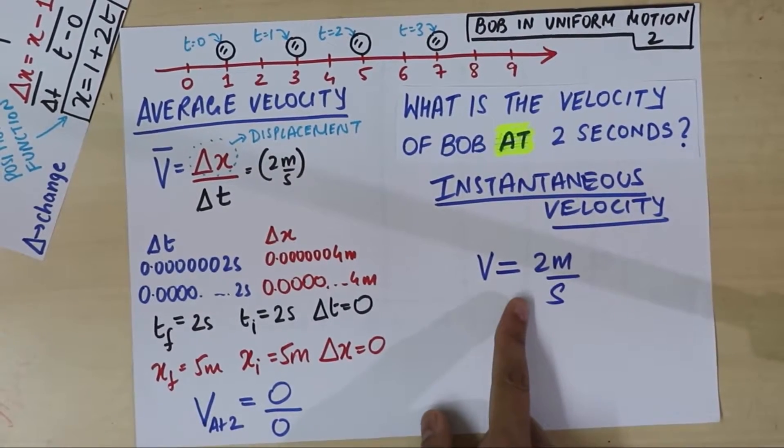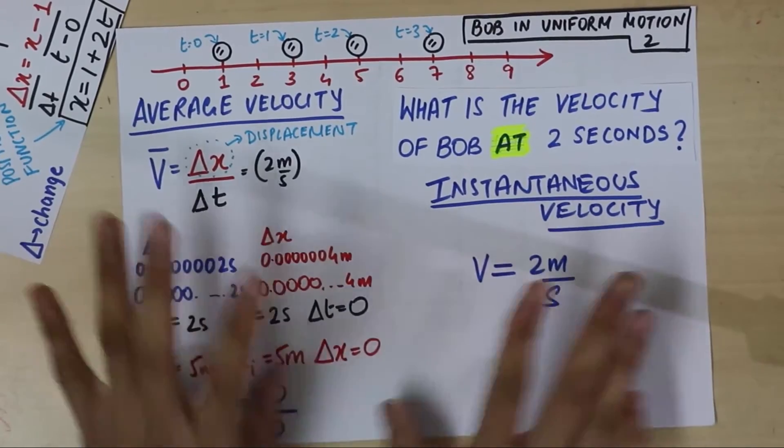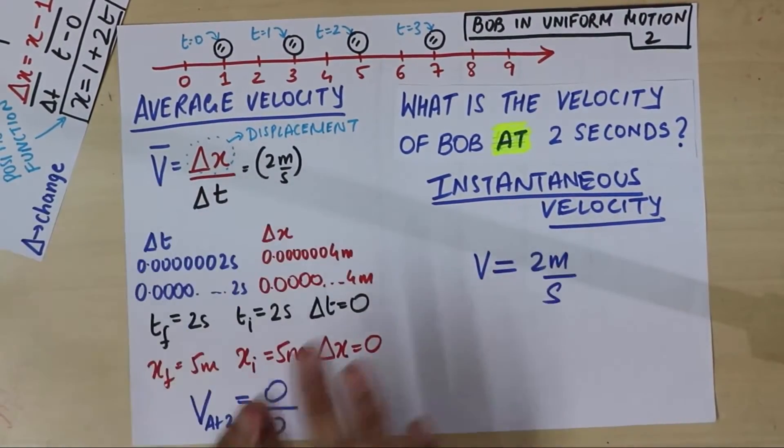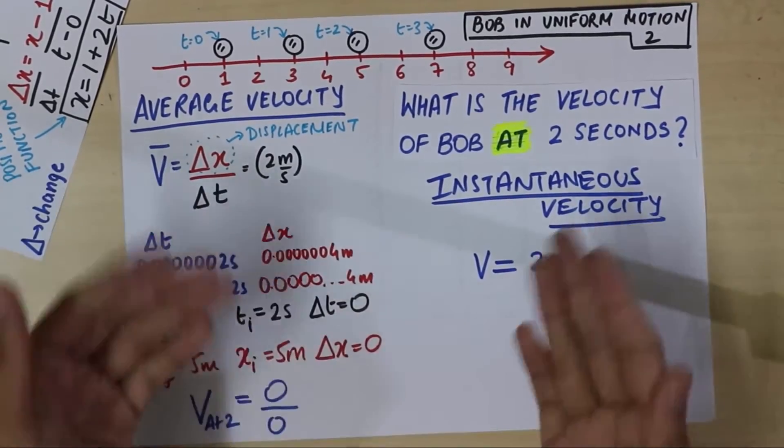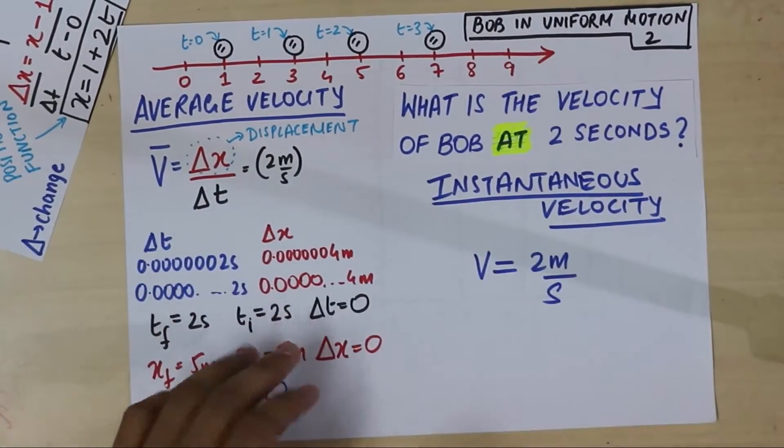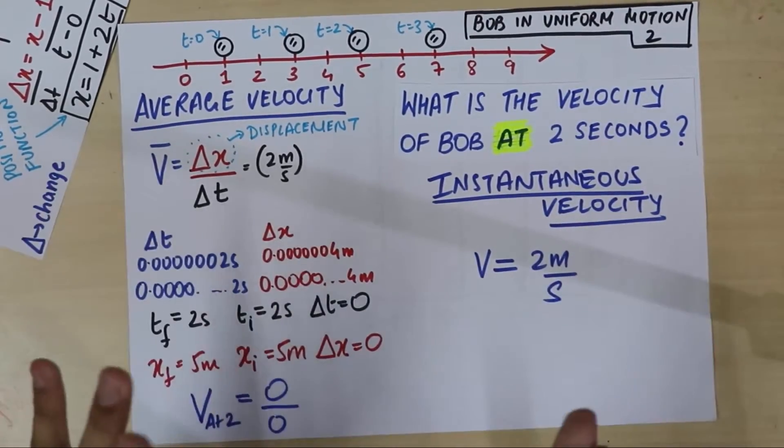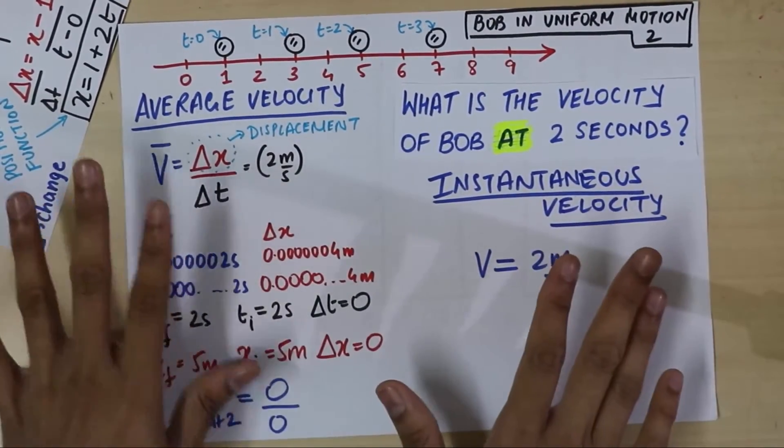That answer will still remain 2 meters per second. But don't take this for granted, people. It's not a general case. In general, average velocity and instantaneous velocity need not be the same. It's a characteristic feature of uniform motion. In uniform motion, it doesn't matter which velocity you're talking about. You'll always get the same result.